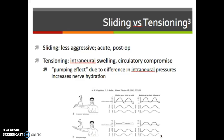Sliding is less aggressive and is used in acute and post-operative conditions because the peak force or tension is not as high. When coming out of immobilization, you start lower and slowly advance forward. Tensioning is used for intraneural swelling and circulatory compromise. You do get a pumping effect due to differences in intraneural pressures, which increases nerve hydration and mobility.